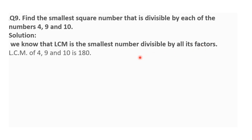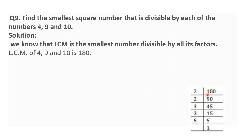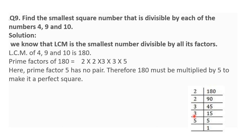So we have to find the LCM of 4, 9, and 10, which is 180, by the prime factorization method. We can see: 2 nines are 18, then 90 is divisible by 2, giving 2 fours are 8 and 10; then 3 fives are 15, and again 3 fives are 15, and 5 ones are 5. So the prime factorization of 180 is 2 × 2 × 3 × 3 × 5.